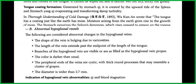Let's look at how these abnormal hypoglossal vessels present. The shape of the vein is bulging due to varicosities. The length of the vein extends past the midpoint of the tongue. The branches of the hypoglossal vein are visible or as filled as the hypoglossal vein proper. The color is darker than usual, or the peripheral ends of the veins are cystic with thick tortuous processes that may resemble a cluster of grapes, or the diameter is wider than 2.7 millimeters.